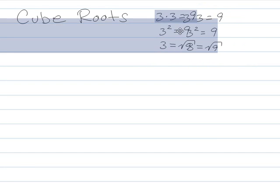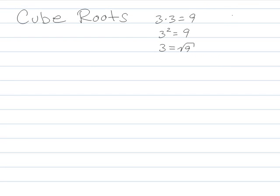Now with cube roots, I could say that two times two times two is eight. Or two cubed is eight. Right? So since two cubed is eight, the cube root of eight is two. And that's how we write it. We do the little square root symbol with a little three on there. So the cube root of eight is two.